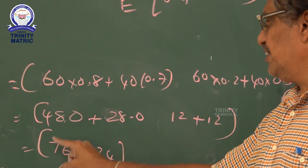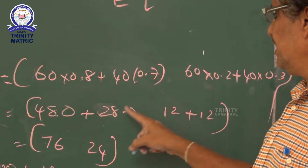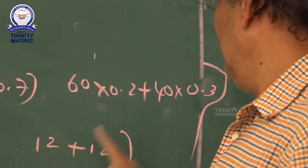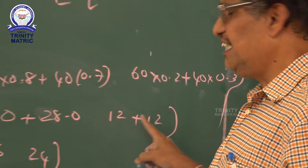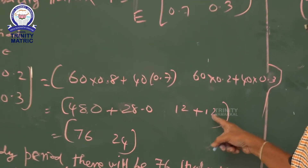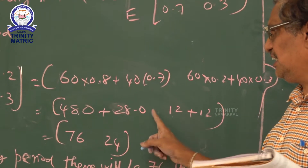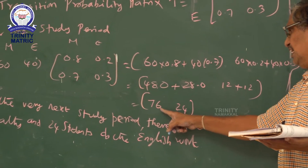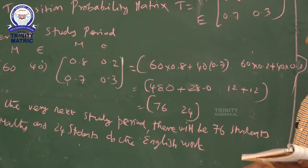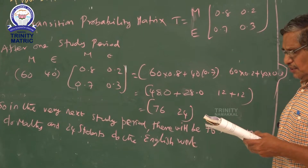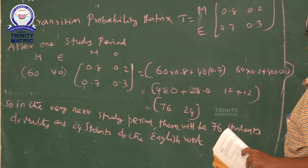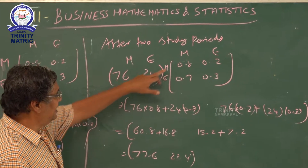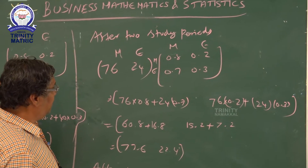Computing: 60 × 0.8 = 48, and 40 × 0.7 = 28, giving 48 plus 28 = 76 for math. For English: 60 × 0.2 = 12, and 40 × 0.3 = 12, giving 12 plus 12 = 24. So after one study period, there will be 76 students doing math and 24 students doing English.